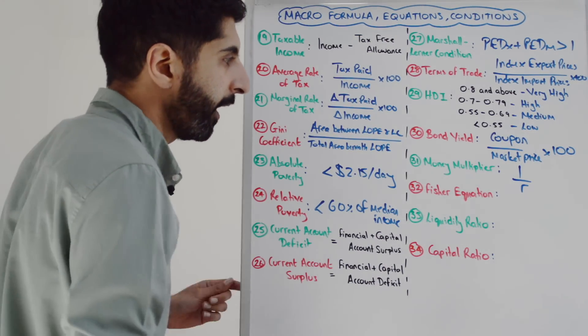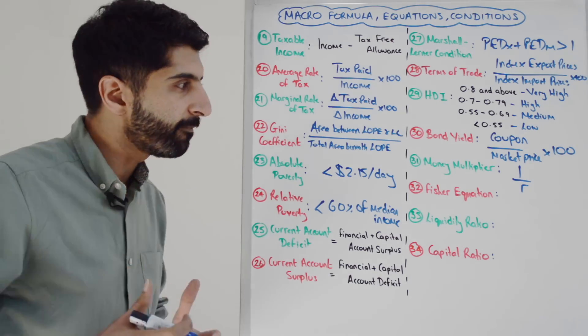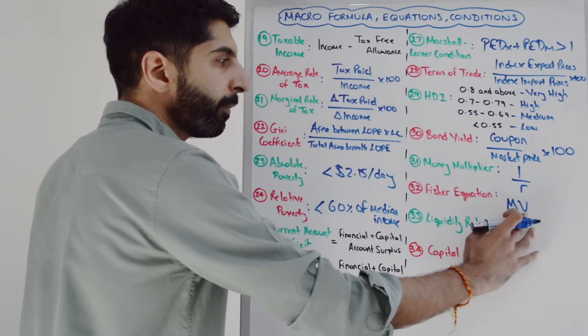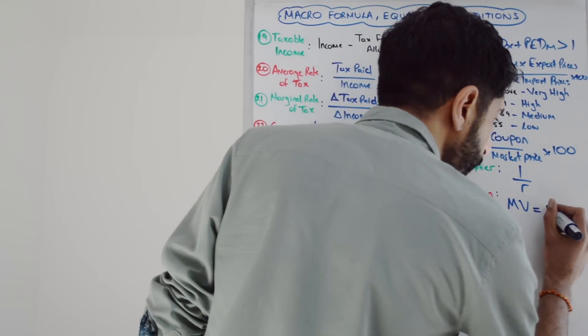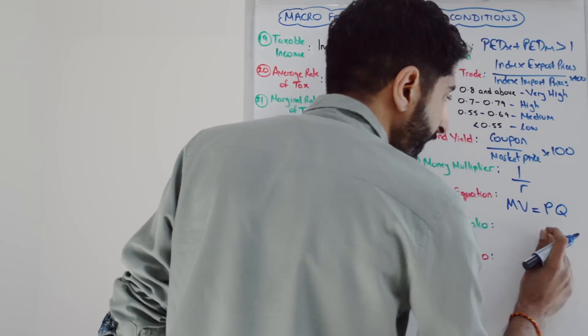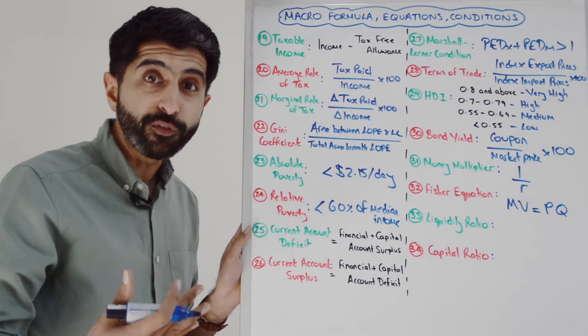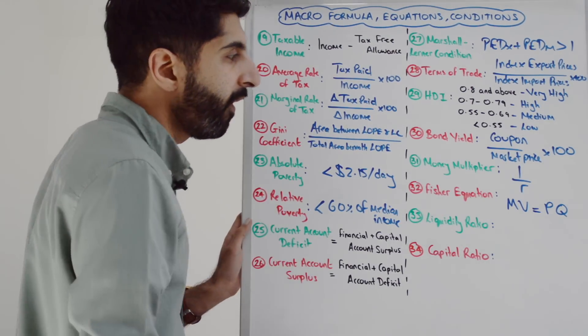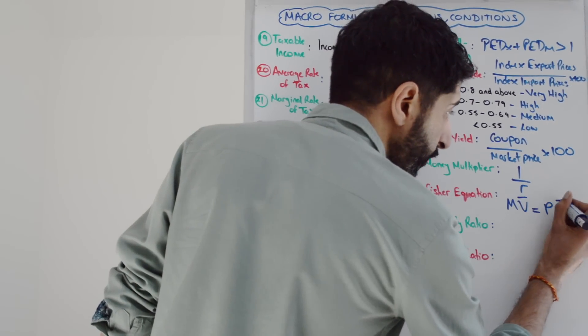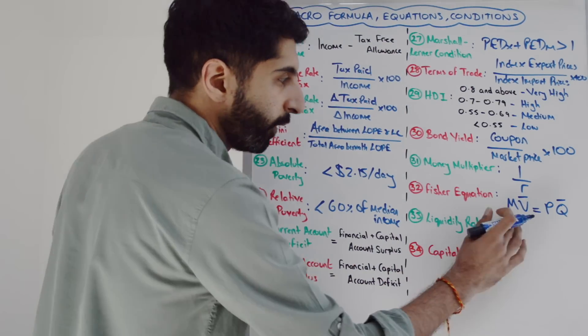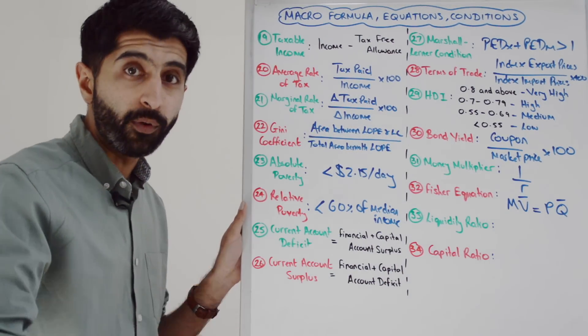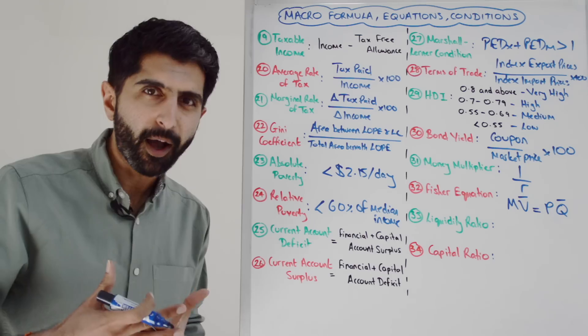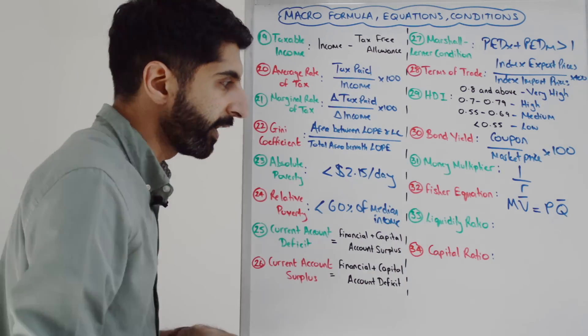The Fisher equation or the quantity theory of money: MV - the money supply multiplied by the velocity of circulation - is equal to PQ, the average price level multiplied by the value of goods and services in the economy. Q is real GDP. So MV equals PQ, and classical economists assume that V and Q are fixed, which takes you to an increase in the money supply directly correlating with an increase in the price level, i.e. inflation.